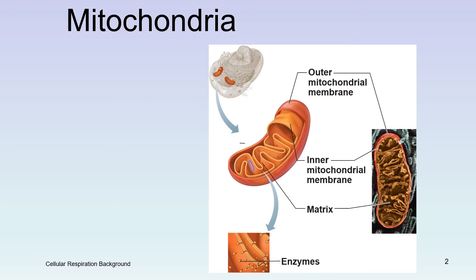Recall from a previous module that mitochondria are one of the two energy-converting organelles in a eukaryotic cell, the other organelle being a chloroplast. Students often think that plants contain chloroplasts and animals contain mitochondria, but this is untrue. All eukaryotic cells contain mitochondria — plants included.